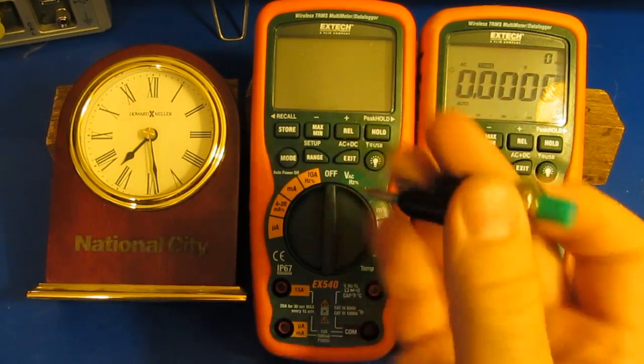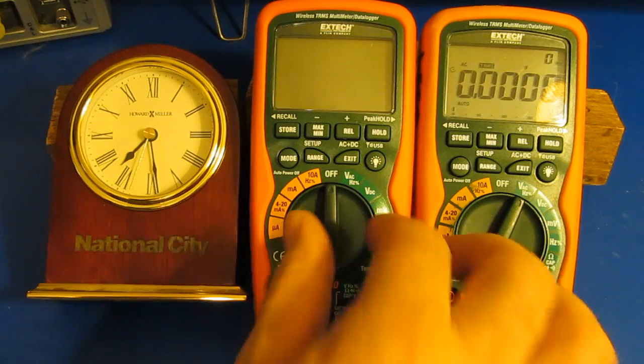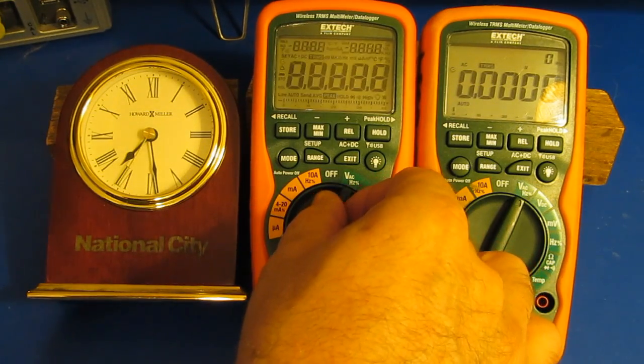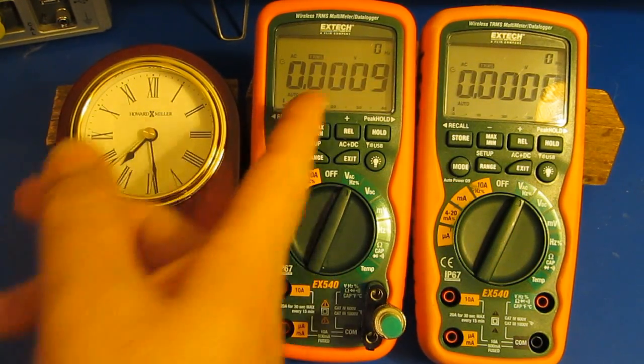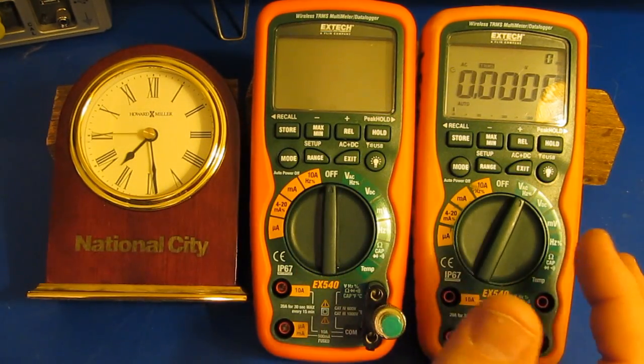So what I've got here is a 50 ohm terminator. I'm going to plug that across the two inputs. And I'm going to turn this over to volts AC. And we can see. Now, this is where it really gets interesting.